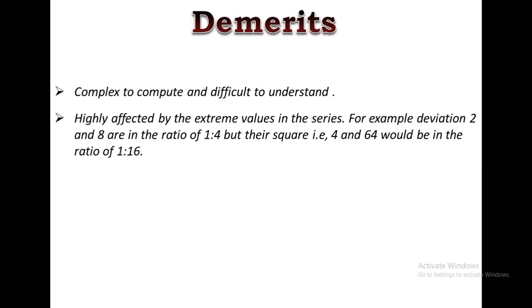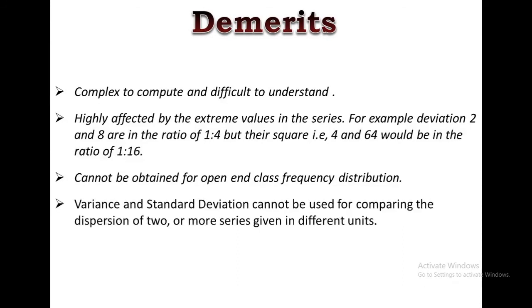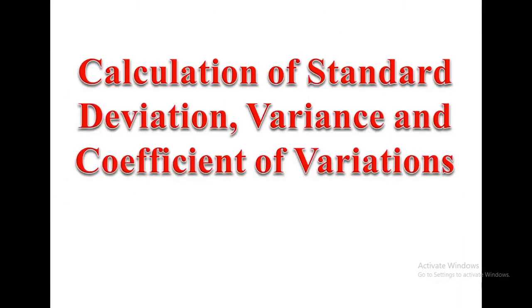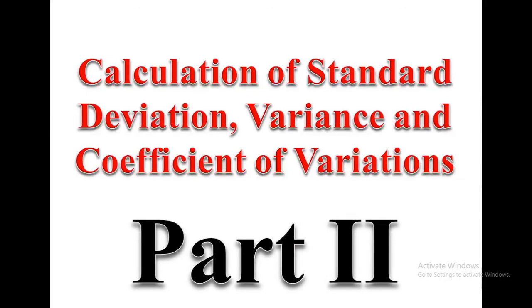In addition, standard deviation cannot be obtained for open-ended class frequency distributions. Standard deviation cannot be used for comparing the dispersion of two or more series given in different units. Thus, coefficient of variation should be used for comparison. So, these were the pros and cons of standard deviation and variance. Dear friends, thank you for watching the first part of this video on standard deviation, variance, and coefficient of variation. In the second part of this video, we will see how to calculate these measures in various kinds of data sets. Till then, like and share this video. Press the bell icon to subscribe to my channel. Jai Hind. Bye bye.